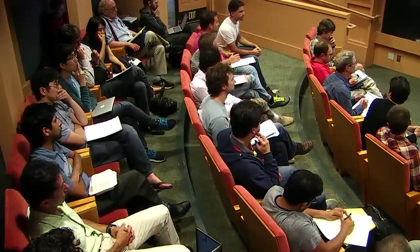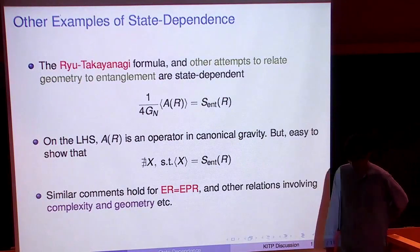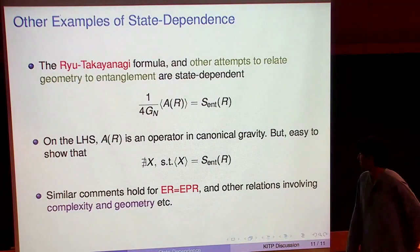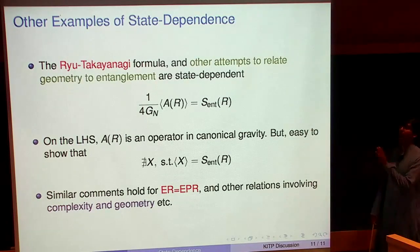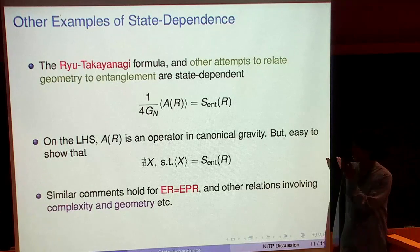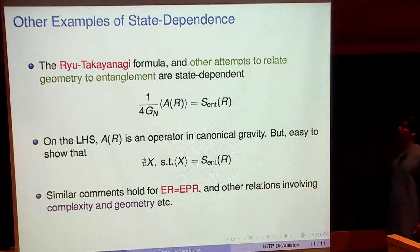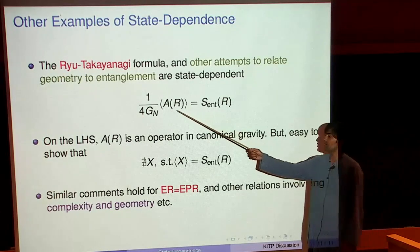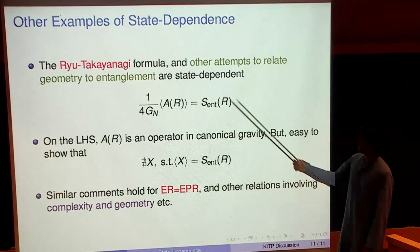Question on the RT formula slide: at next order in 1/N, the left-hand side is no longer linear because it involves the bulk. Response: This is a leading-order formula. Having some 1/N corrections would seem very unusual to fix the leading-order state-dependence — it would be strange if 1/N corrections fix something that's leading order state-dependent. The area is a real operator in canonical gravity on the left-hand side. If you believe this formula is correct to leading order in 1/N, then you have a state-dependent observable on the right and a linear one on the left.